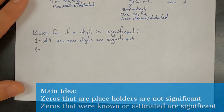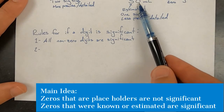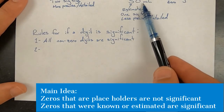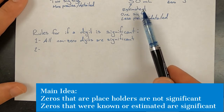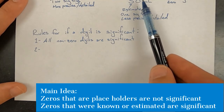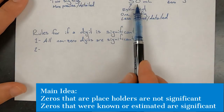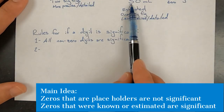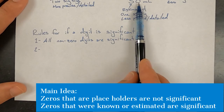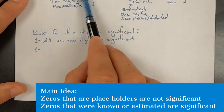Rule two is about zeros that are placeholders coming after the estimated digit. A place-holding zero is denoted as a placeholder by not having a decimal point. So a trailing zero — one that comes after any non-zero digits — is only significant if there is a decimal point.